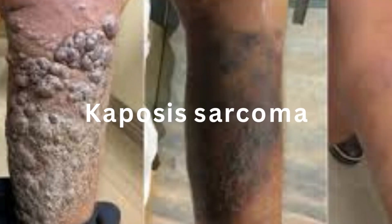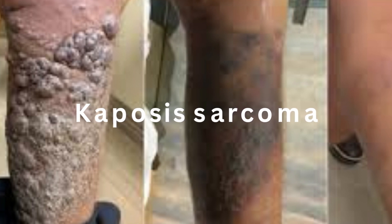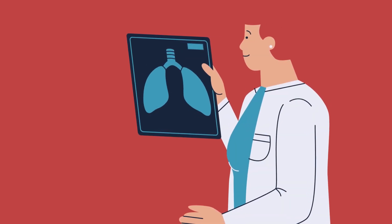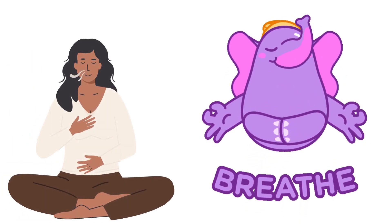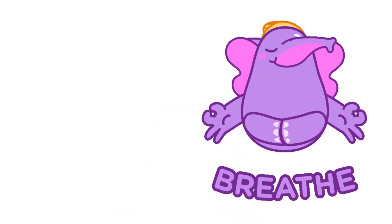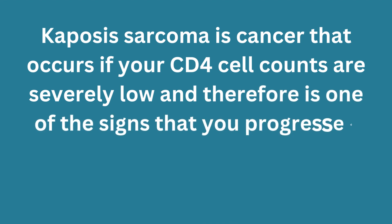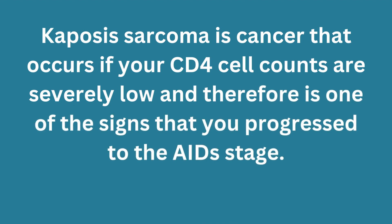1. Kaposi sarcoma. Kaposi sarcoma is a sickness that makes purple or brown spots show up on the skin. It can also affect important parts inside our bodies, like the lungs, liver, and digestive system, and can lead to very serious symptoms, making it hard for you to breathe. Kaposi sarcoma is a cancer that occurs if your CD4 cell counts are severely low, and is one of the signs that you've progressed to the AIDS stage.